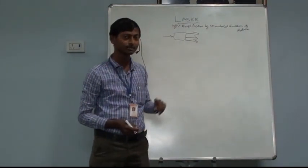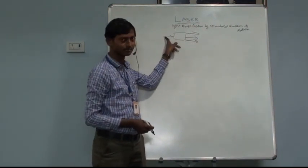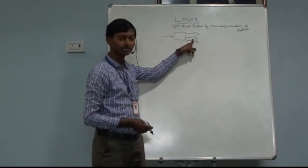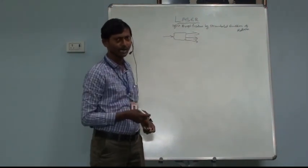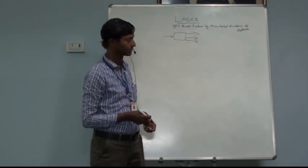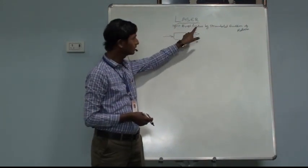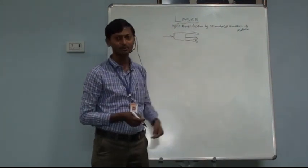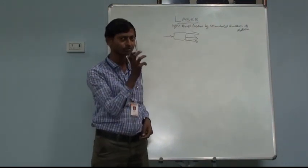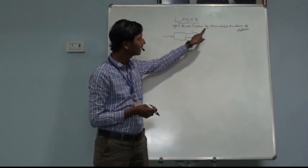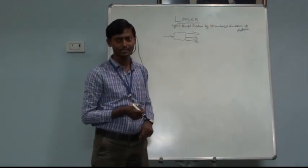In the case of laser light, the input is less but the output consists of a very high strength signal — that is called amplification. In laser light, light is amplified by the process of stimulated emission of radiation. Stimulated means exciting or forcing — the light comes out by stimulated emission of radiation.